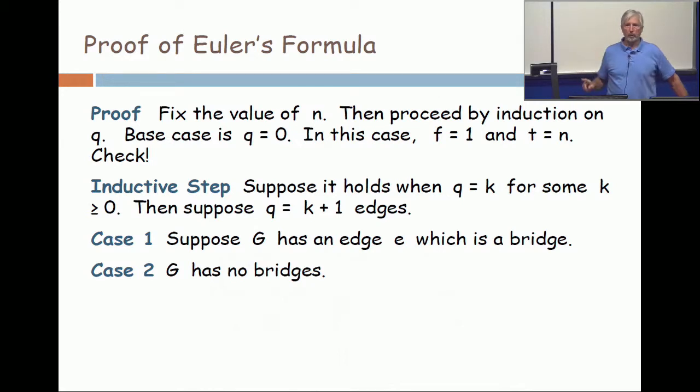So look at the formula. It would say n minus 0 plus 1 equals t plus 1. But how many components do you have when you have n loose vertices? You have each vertex being a component all by itself. And so the formula is obviously true when there are no edges. Agreed?